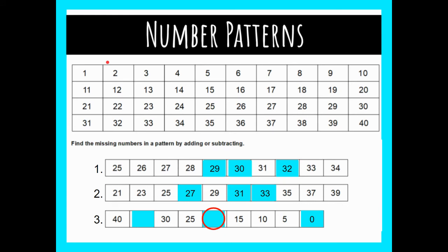Now I'm going to go to my next little cluster of numbers: 30 and 25. I'll put those on the number line. There are two ways to solve this — the first way is to count back 5: starting at 30, 1, 2, 3, 4, 5 to 25, and then subtract 5 again: 1, 2, 3, 4 — the answer would be 20.